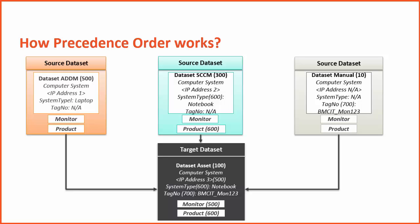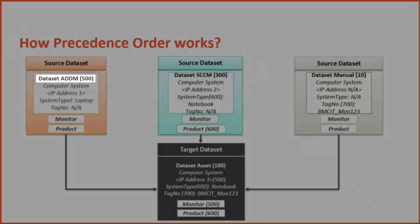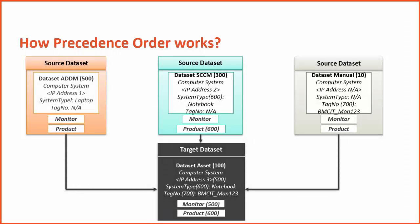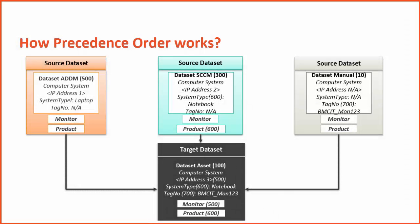There could be a case of overlaps. For example, even SCCM can discover certain sets of servers. To address this issue of overlaps, you can define Precedence Order Rules. Let us assume that you want the ADDM dataset to have the highest precedence for all server-side discovery. However, you want SCCM to have higher precedence for certain server attributes like system type and model. Further, consider that three jobs are configured, one each for ADDM, SCCM, and manual dataset.